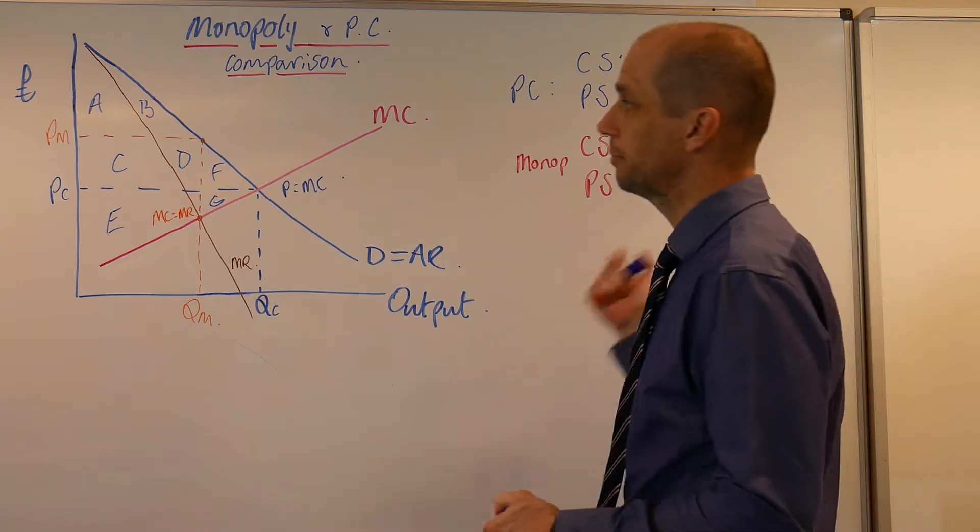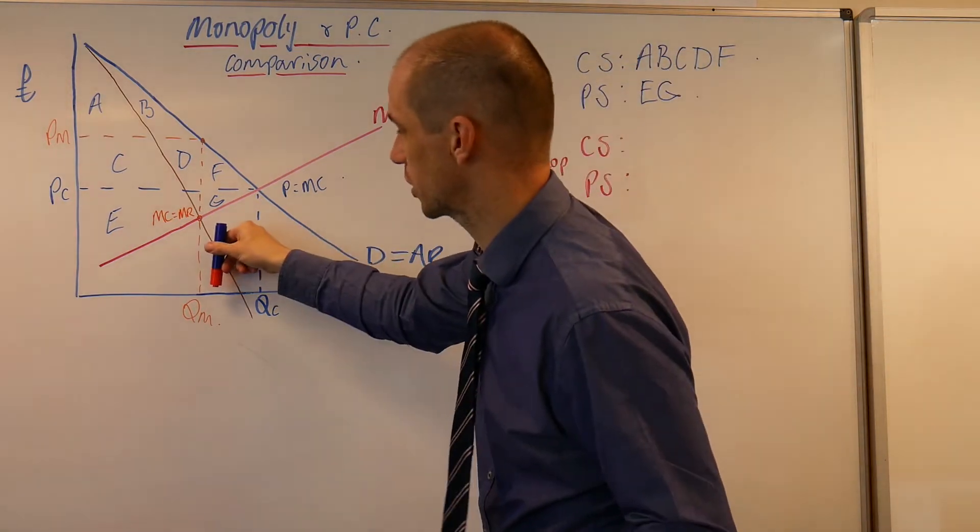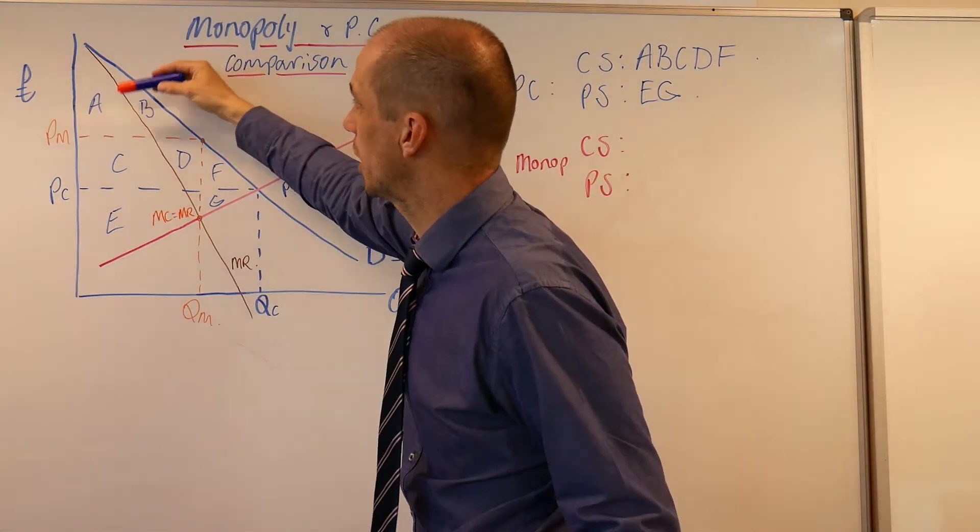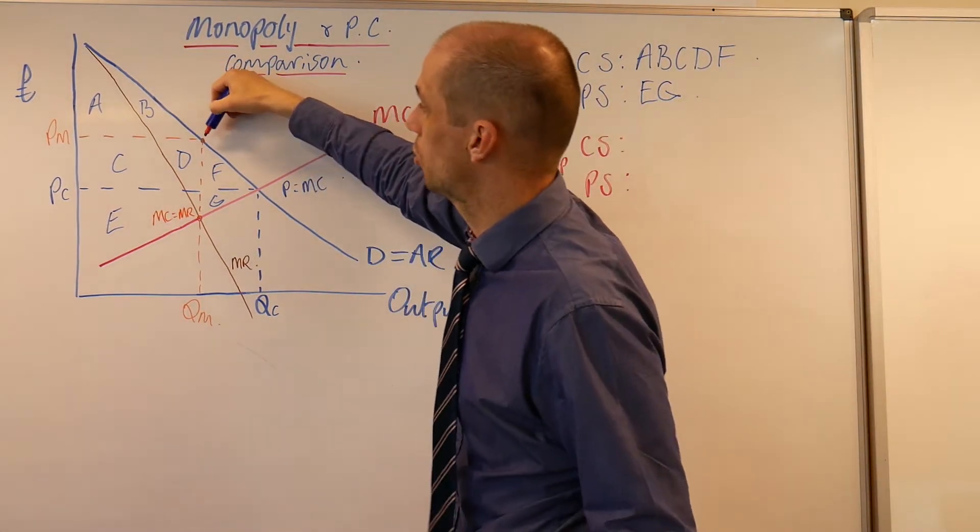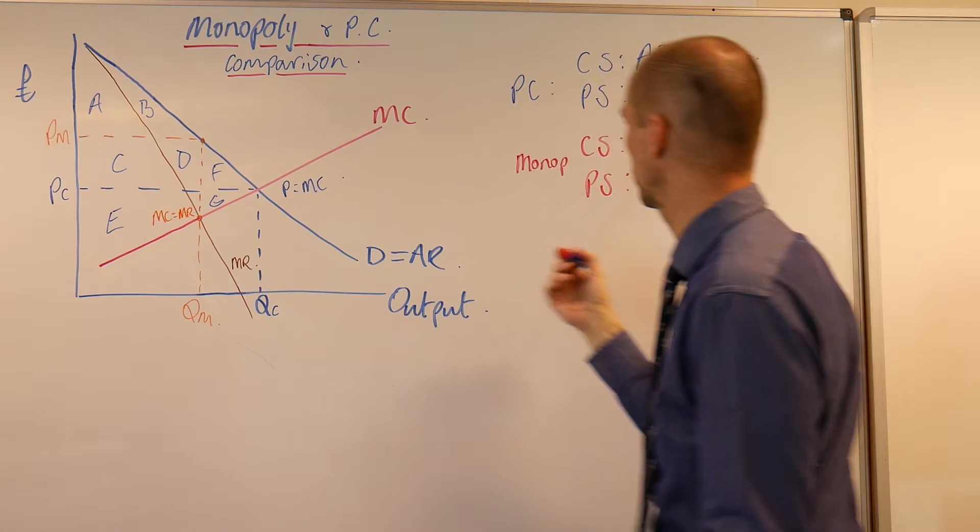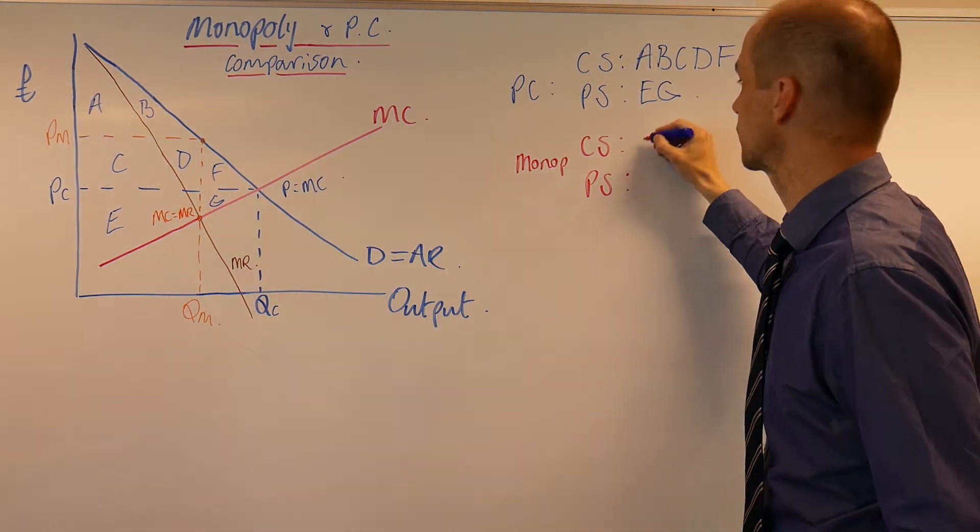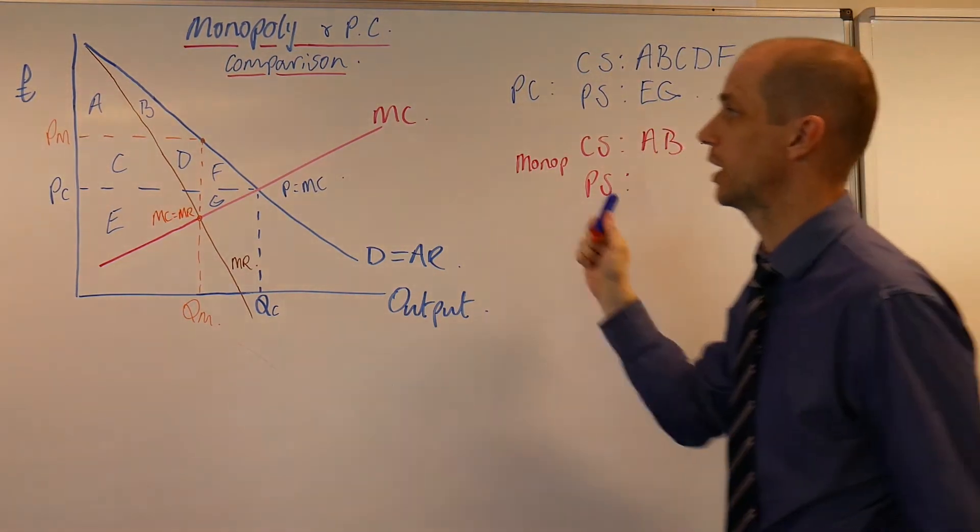Now for a monopoly, notice restricted output and higher price. We can see we've only got this part of the demand curve which exceeds the new market price, so we have areas A and B only.